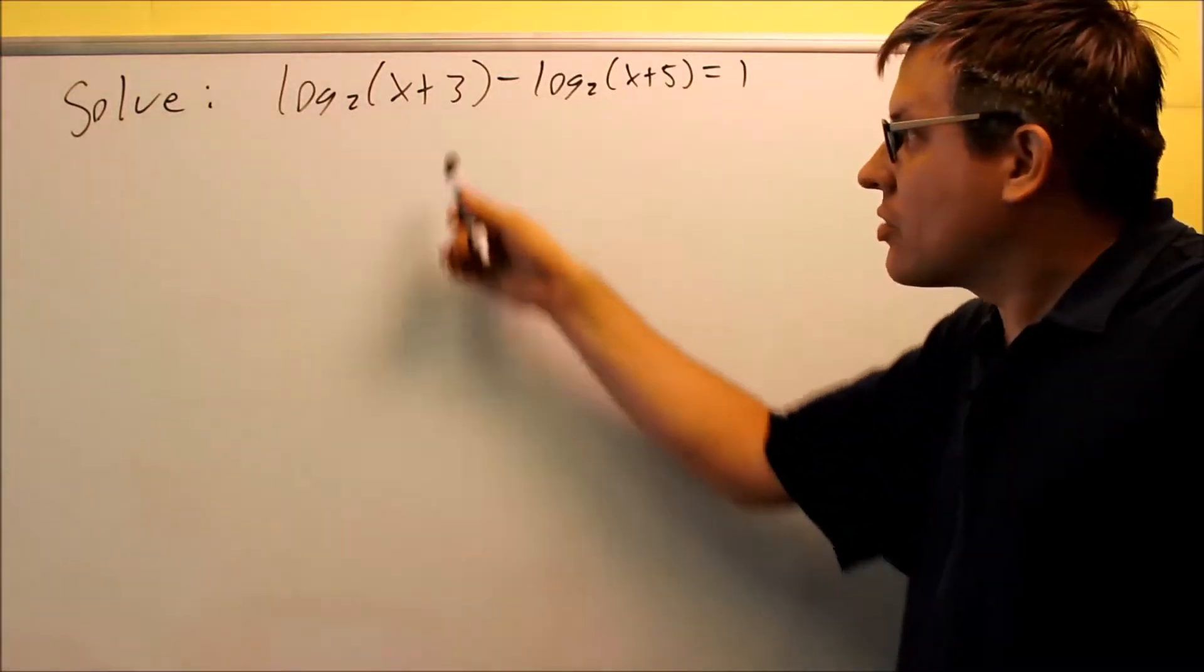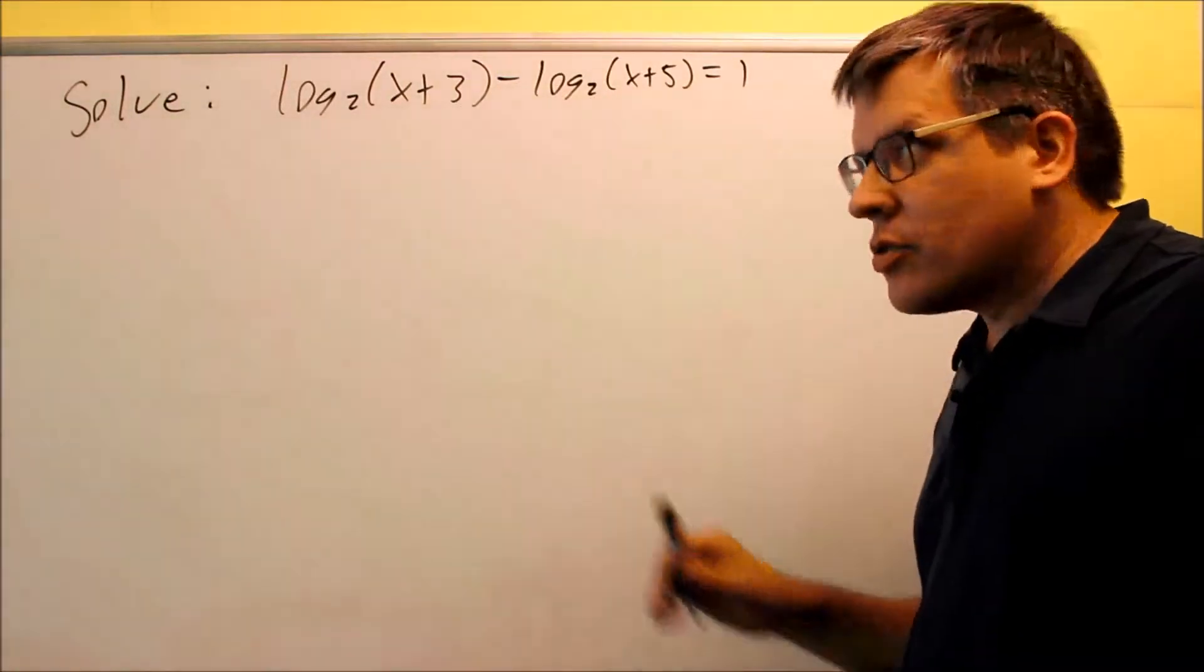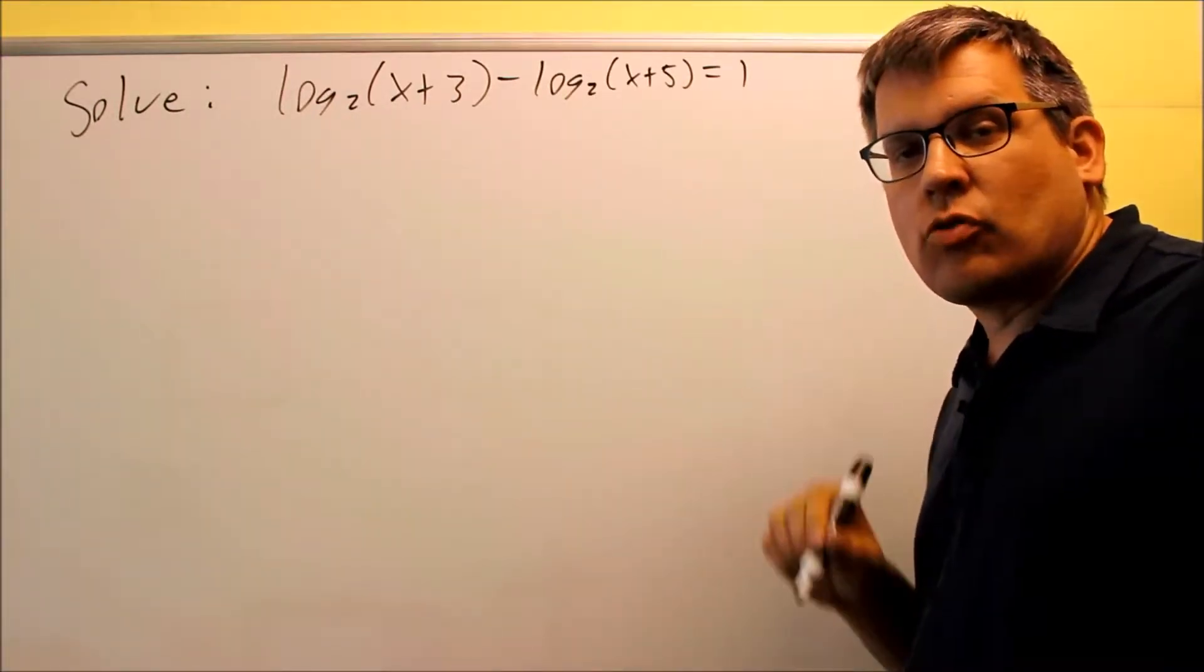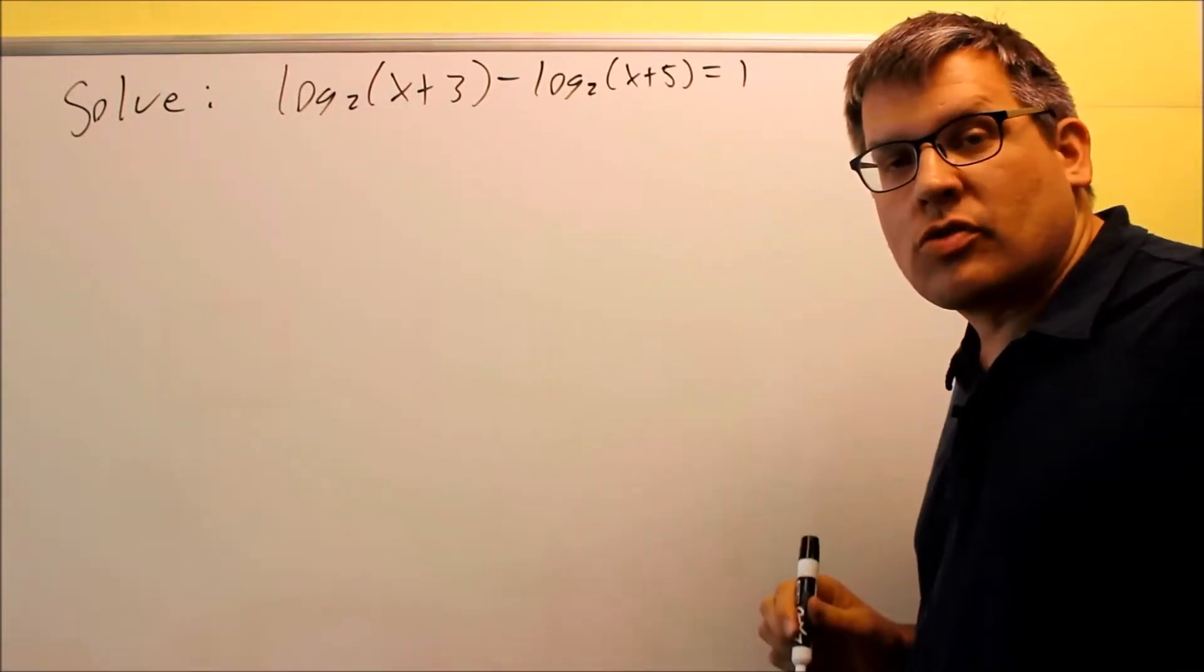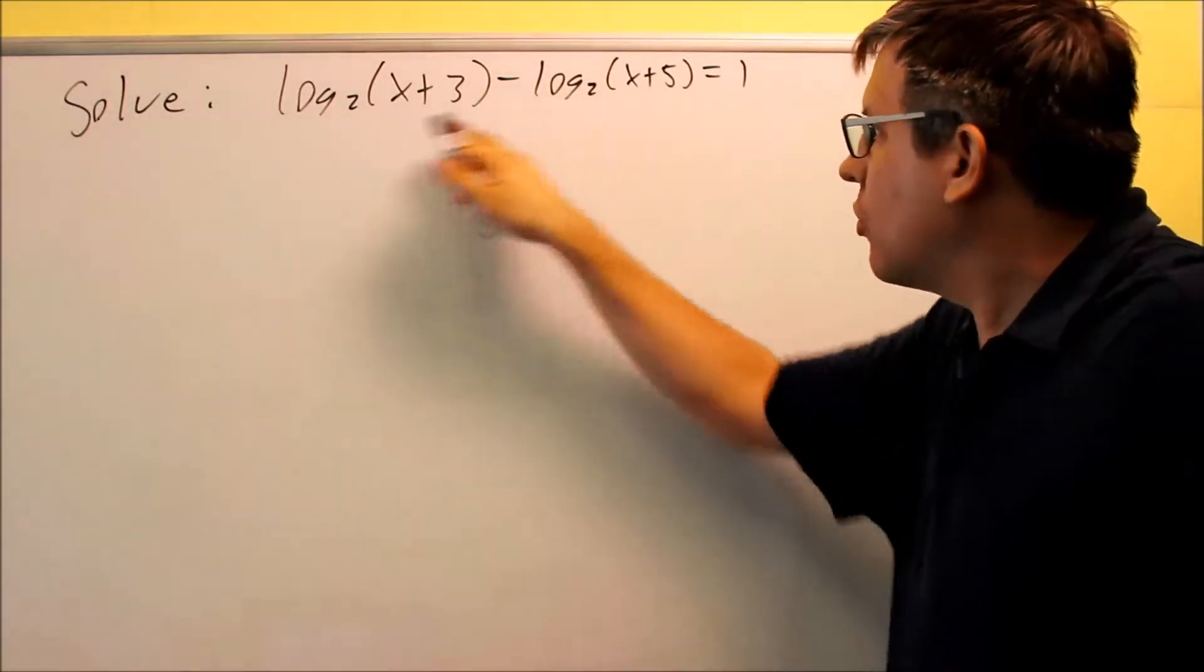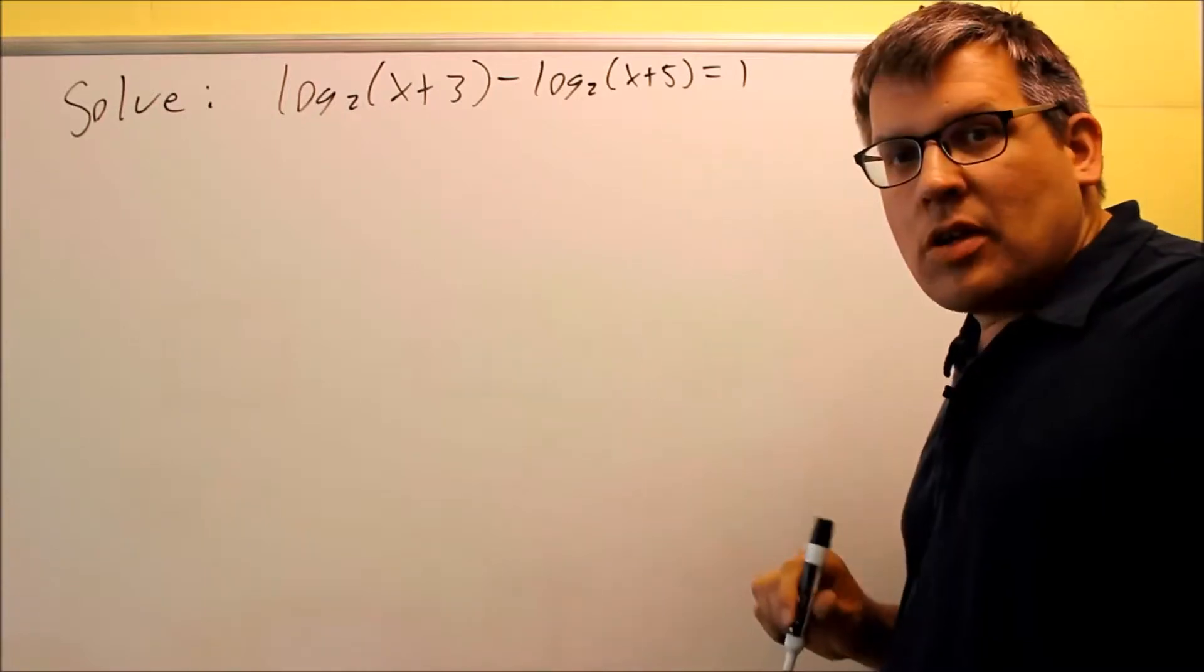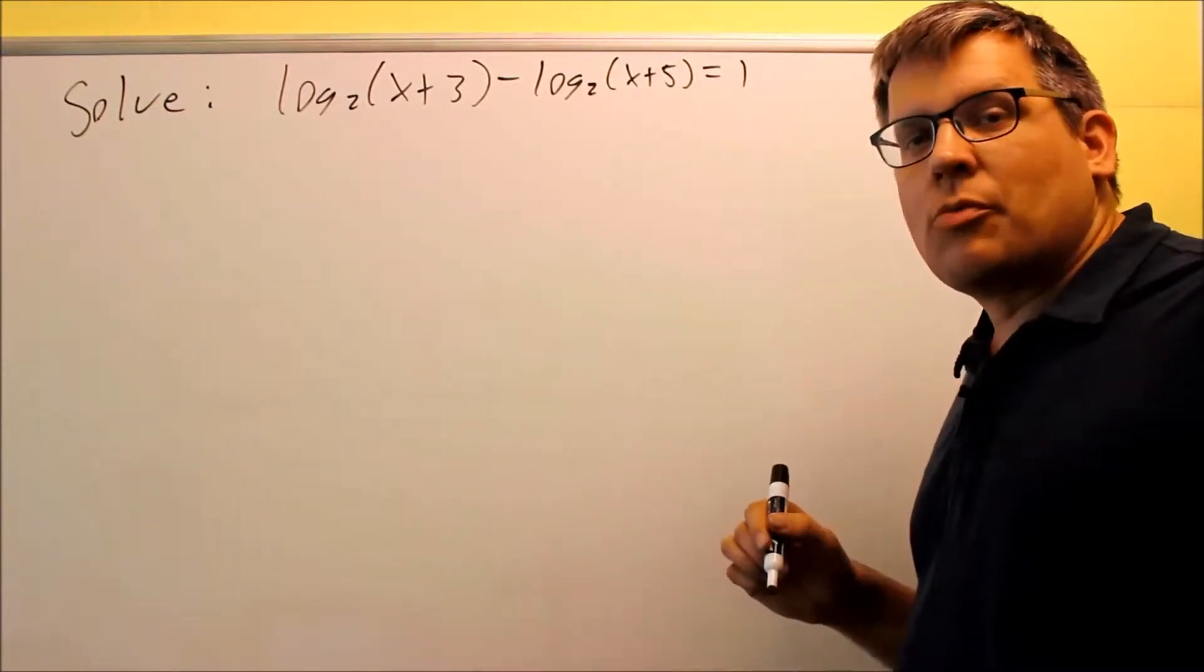Okay, so now we're going to do a log equation. This time we have a minus. So the minus is different because that causes us to have to use a different rule when we combine these together into a single log. So the idea is still, you still want to combine this together and get a single log, but the minus sign means that we'll have a division instead of multiplication.